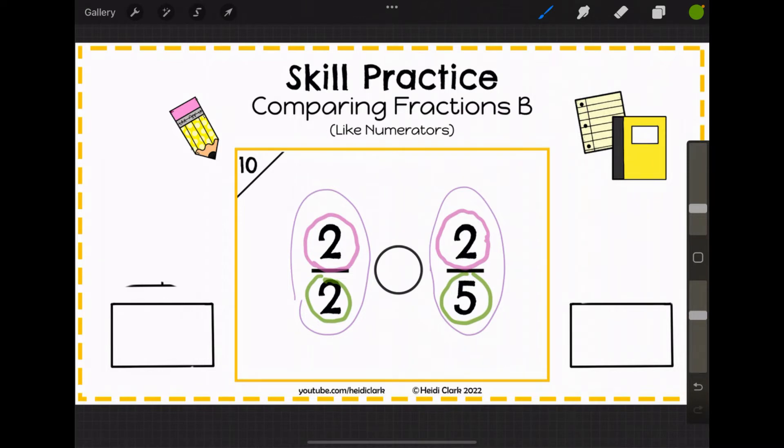For example, this rectangle is going to be split into halves, this rectangle is going to be split into fifths. Which rectangle do you think will have bigger pieces? Let's look, here's a rectangle cut into halves, here's a rectangle cut into fifths. Which one has bigger pieces?